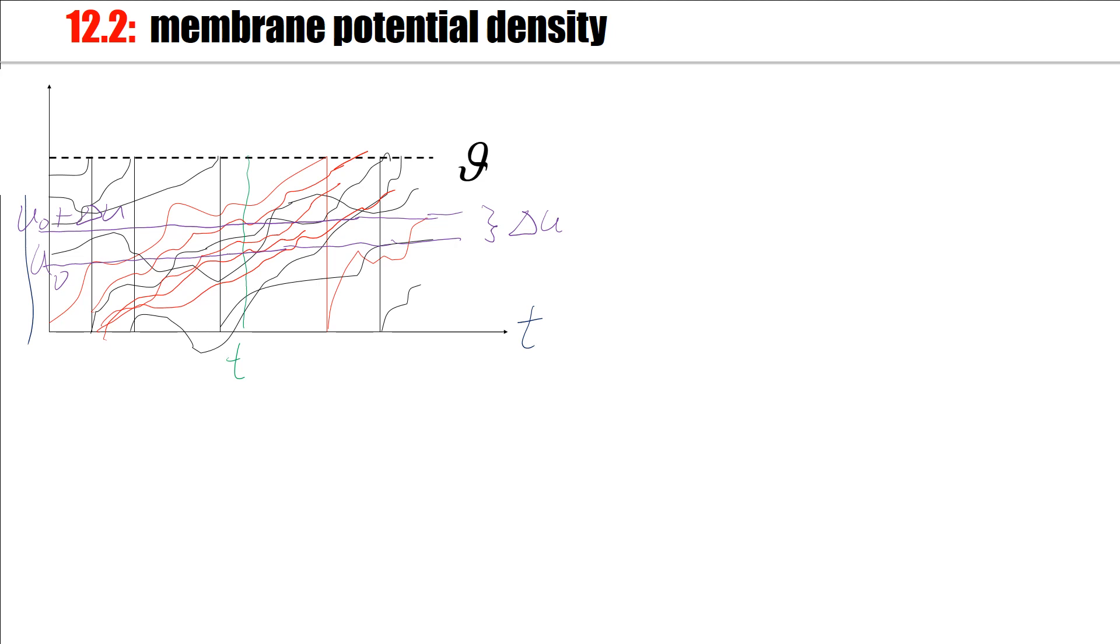Now I say, I look at the number of membrane potential trajectories, trajectories of neurons i, different neurons i, with the property that the ui lies between u0, my reference potential, and u0 plus delta u. So this is the quantity I'm interested in.